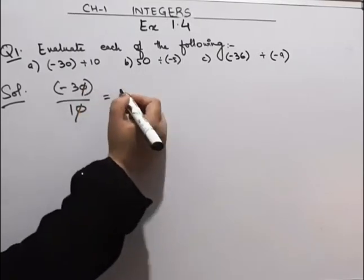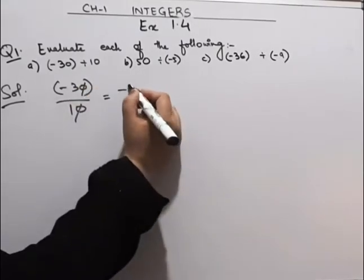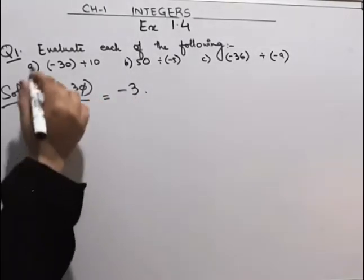A part is minus 30 divided by 10. The zeros cancel out. We will be left with minus 3. The answer is minus 3 for the A part.